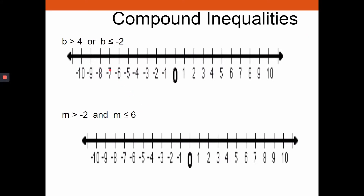For a compound OR inequality on a number line — b greater than four: put an open circle on four and shade right. b less than or equal to negative two: put a closed circle on negative two and shade left. All of these numbers are in the solution set — everybody gets in.